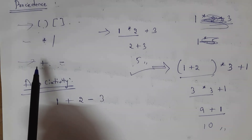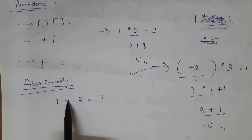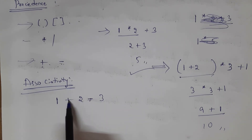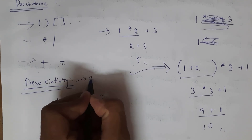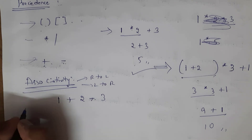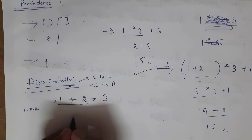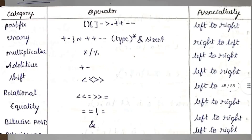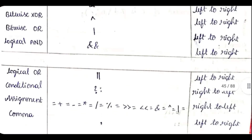Associativity applies when two or more operators of the same precedence appear in an expression — it determines from which direction we start calculation, either right to left or left to right. For example, + and - have the same precedence. For arithmetic operators, associativity is left to right. So for 1 + 2 - 3: first calculate 1 + 2 = 3, then 3 - 3 = 0. There is a precedence and associativity table that you need to write in exams, along with the examples explained.